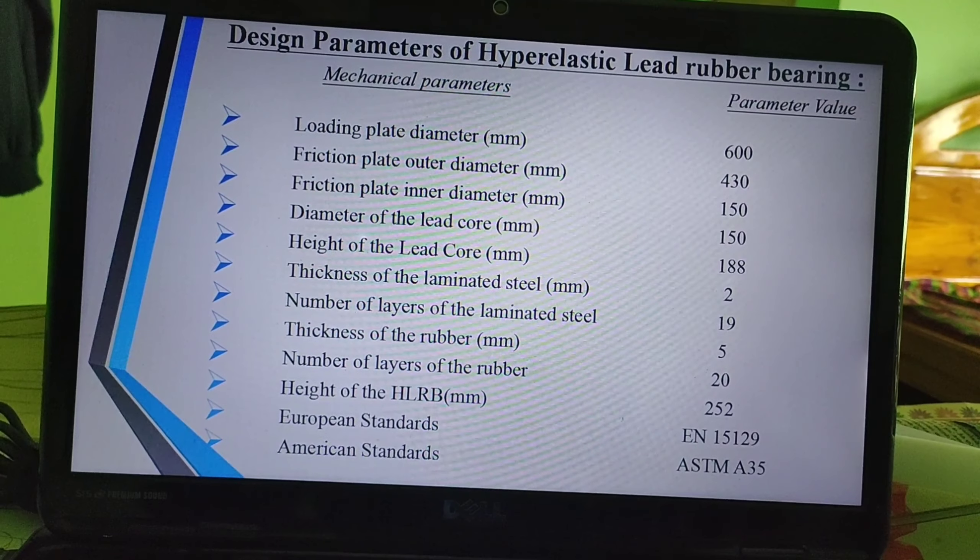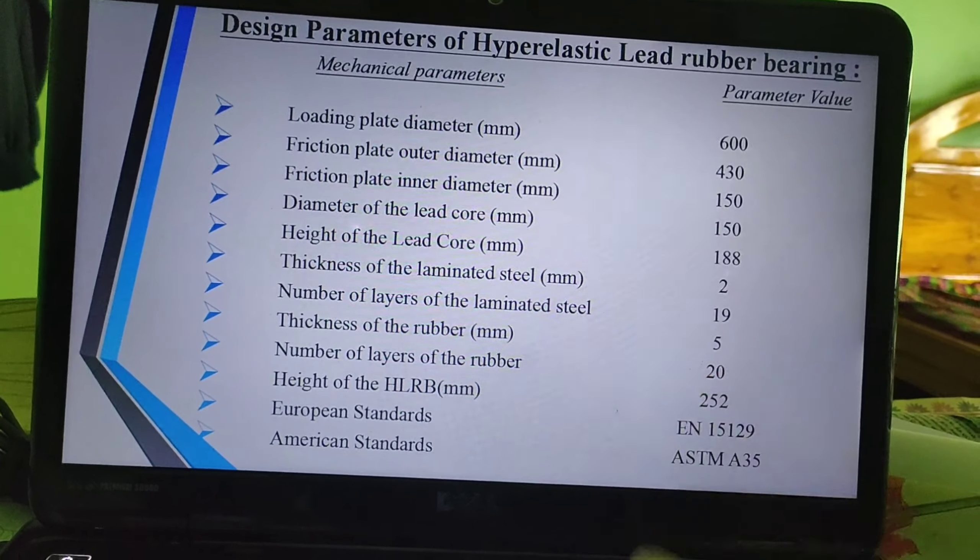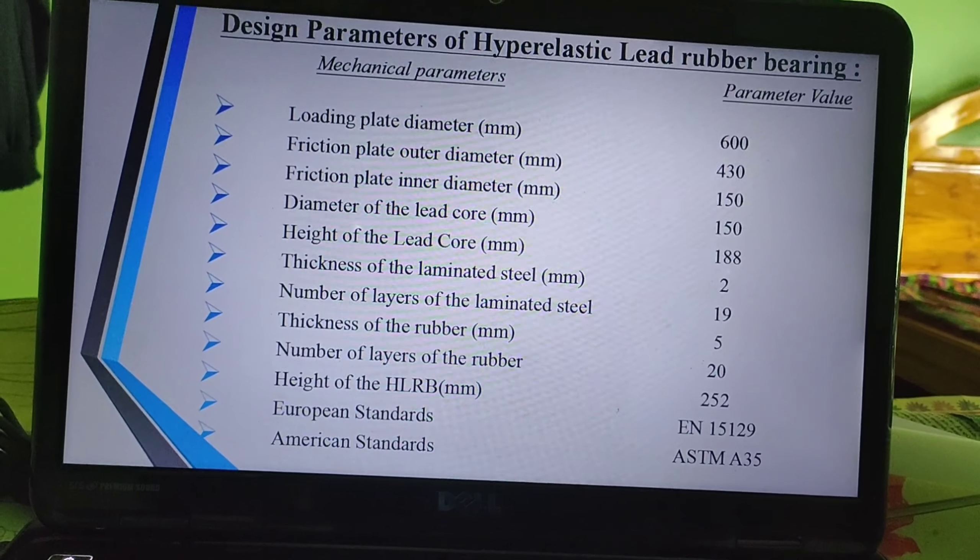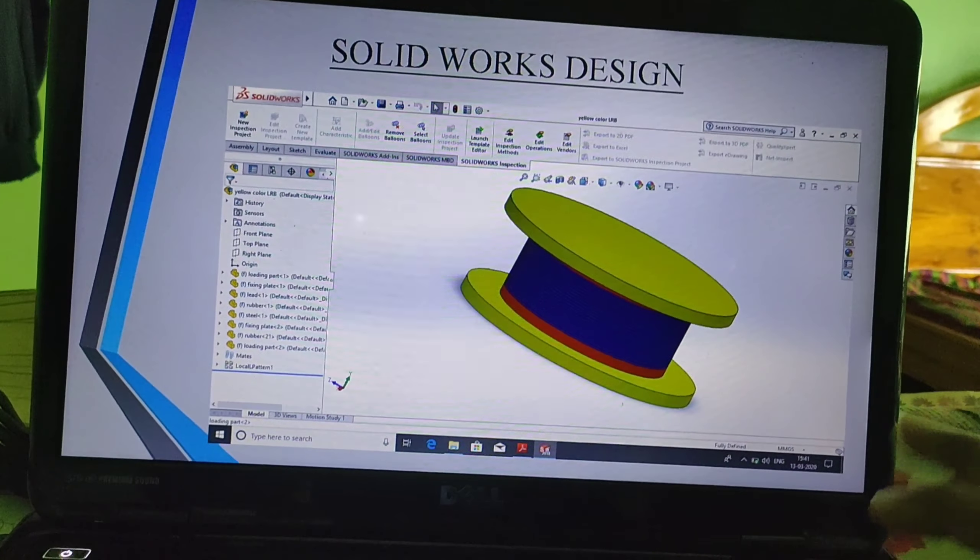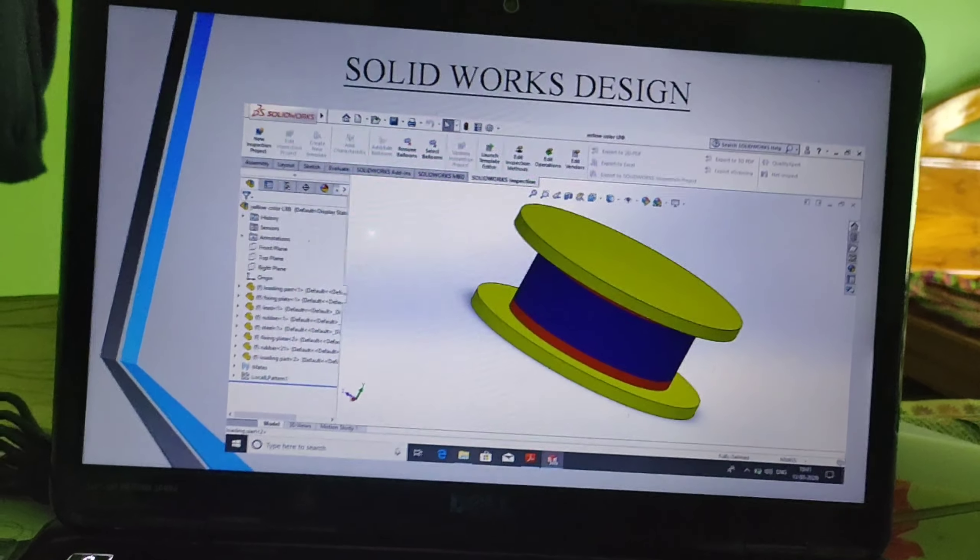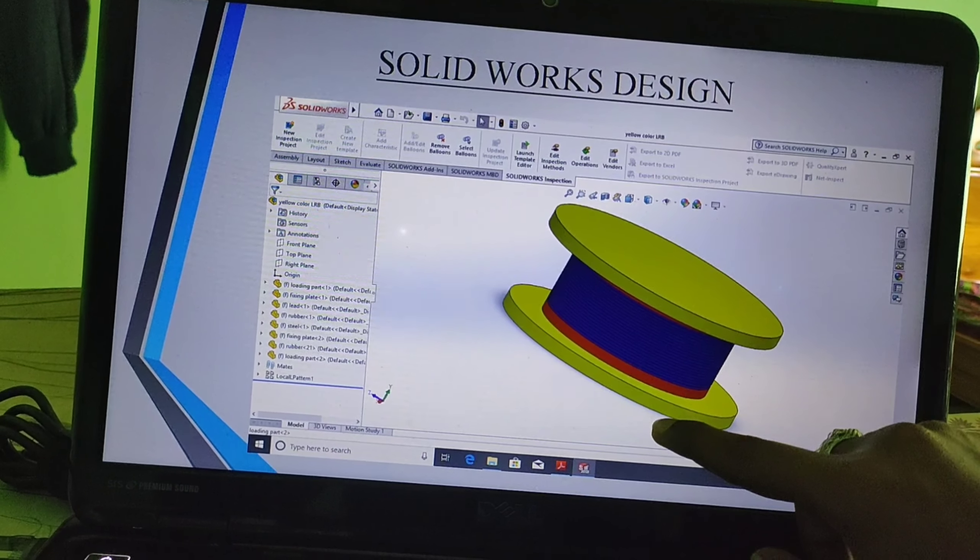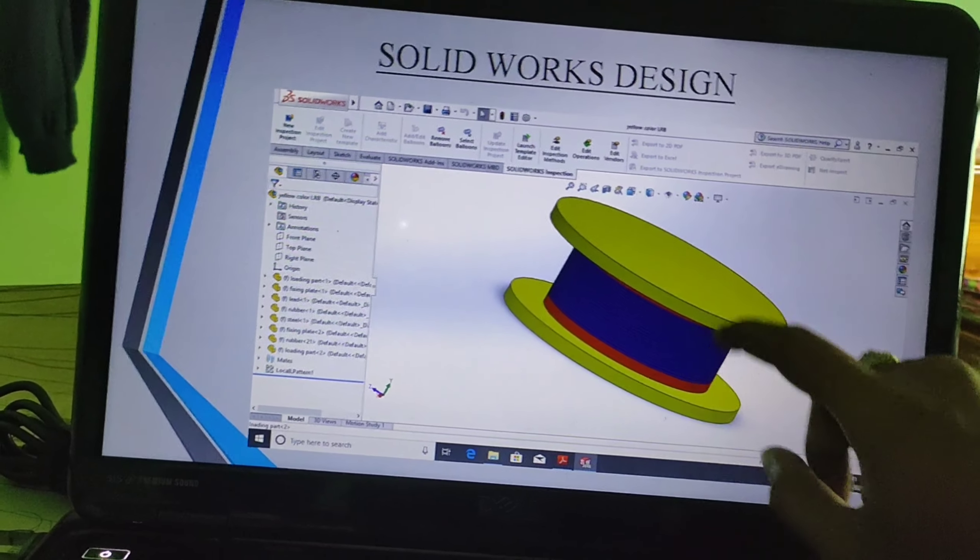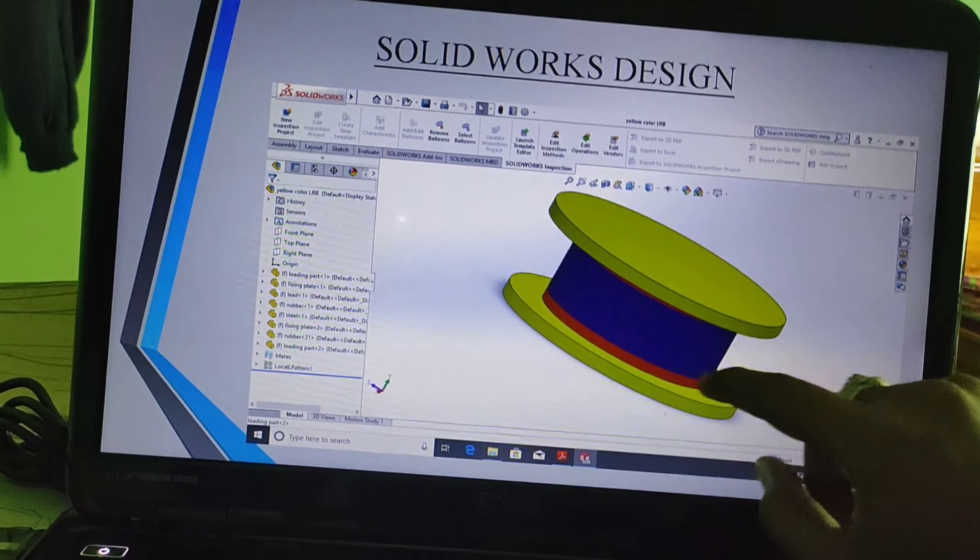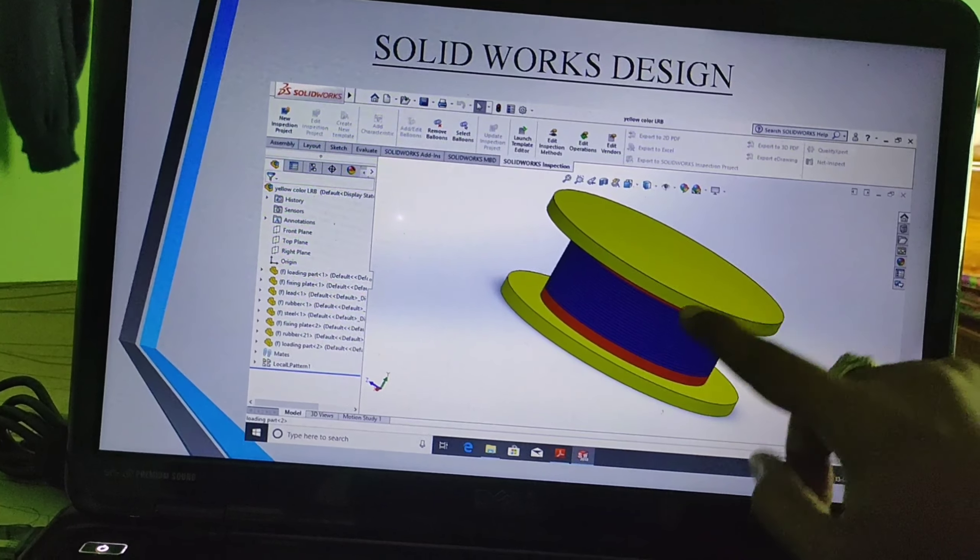This is the design parameters of hyperelastic material. These are the mechanical parameters and this is the parameter value. This is the work of SolidWorks design. Here, this is the upper edge and this is the lower edge. These are the flanges or the bearings. It is founded with steel and cement.